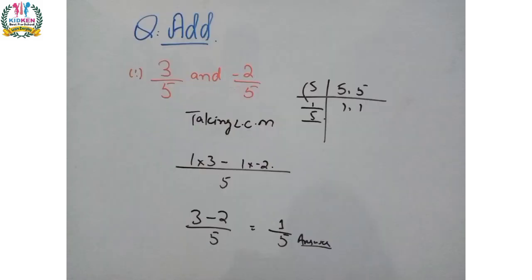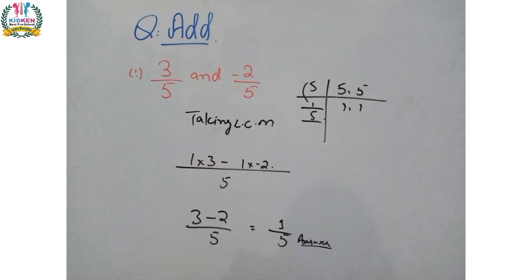The next question is: add the following. Simply take the LCM first and add these values. We have denominators 5 and 5, so the LCM is 5. We divide each denominator into 5 and multiply with the numerators. 5 divided by 5 is 1, multiplied by 3 gives 3; minus 5 divided by 5 is 1, multiplied by 2 gives minus 2. So 3 minus 2 gives 1, and the final answer is 1 upon 5.